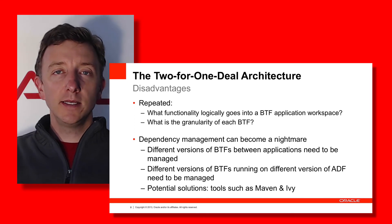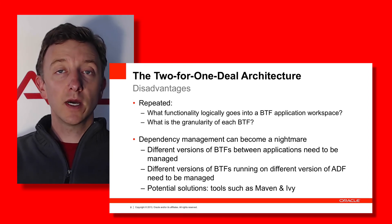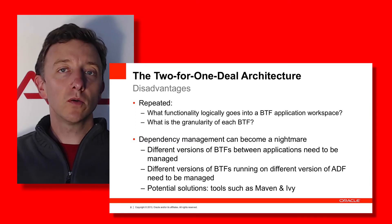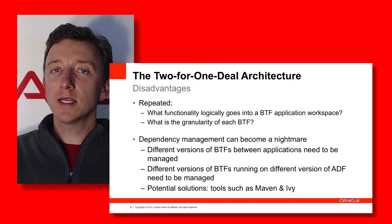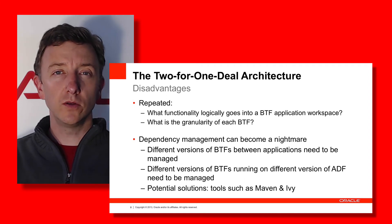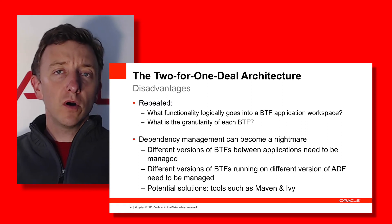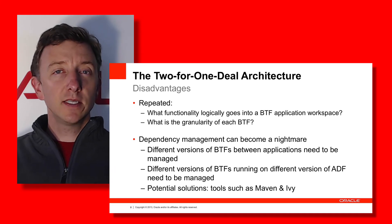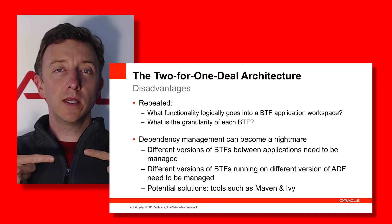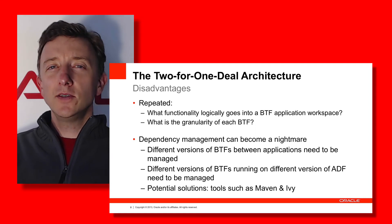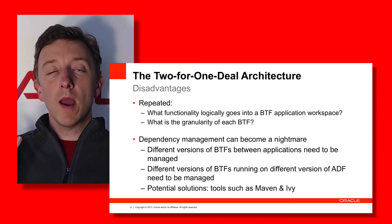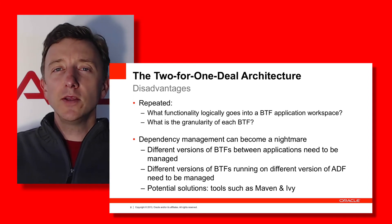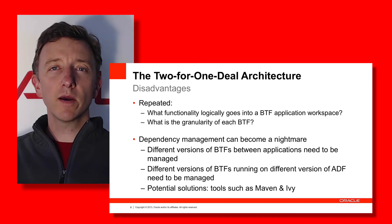While JDeveloper allows you to track dependencies between application workspaces, checking out code, doing builds, and putting them into a repository are things JDeveloper doesn't handle — you'll need additional tools. Dependency management becomes far more complex when you introduce versioning. In the two-for-one deal, you have two master workspaces dependent on the same BTF workspace — for example, application A and application B both on version one.